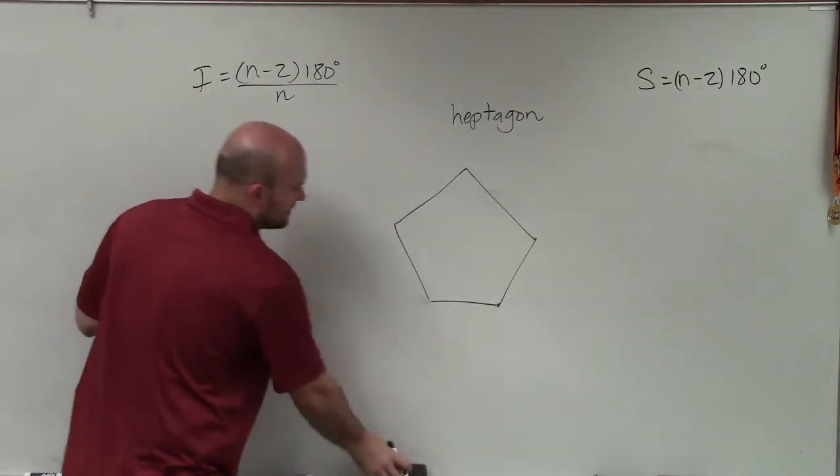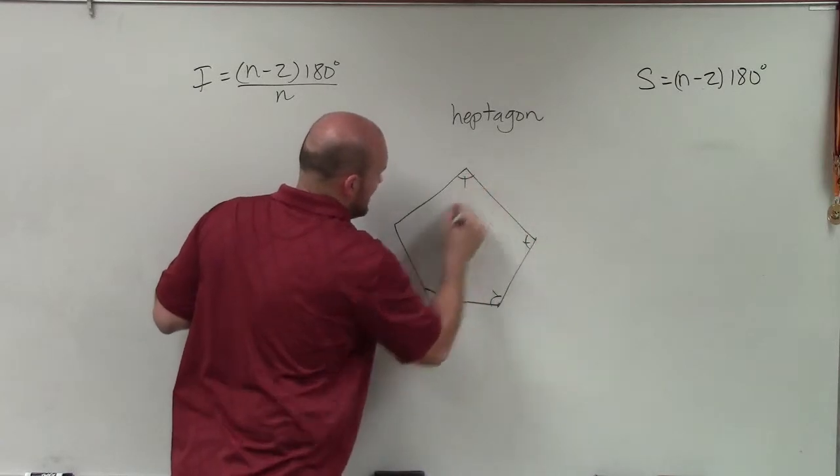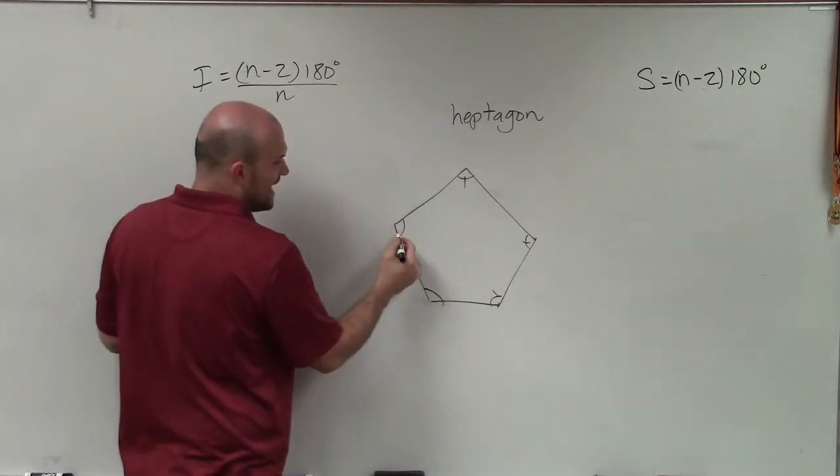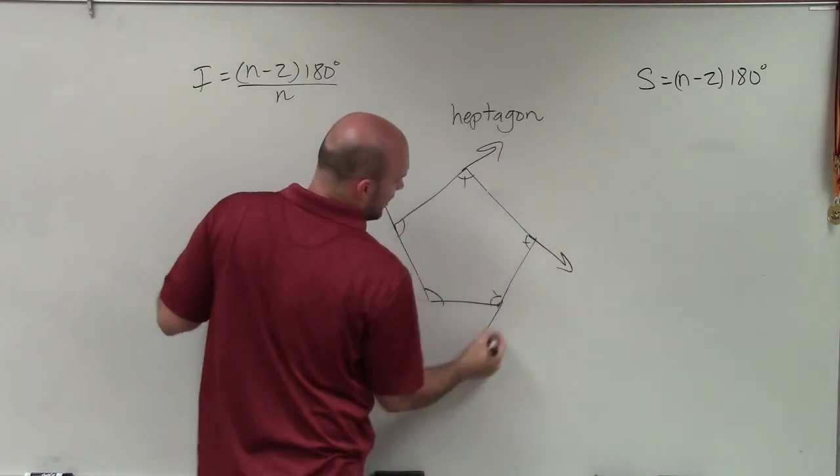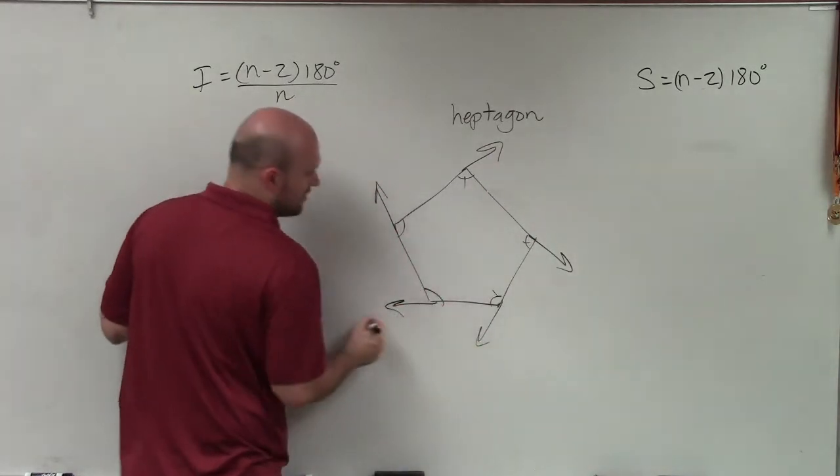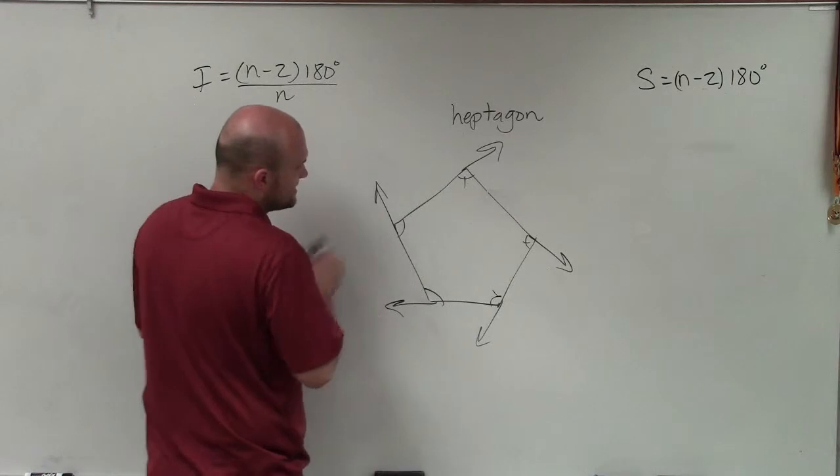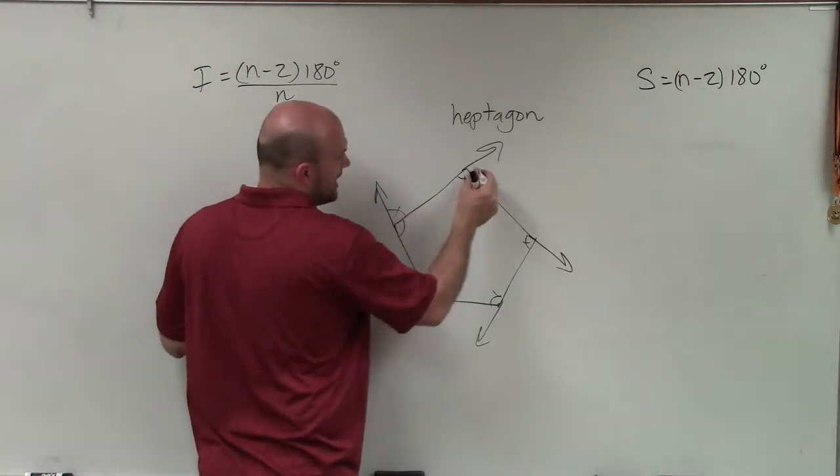Now what's important about this, since all of these angles are exactly the same, remember, finding the exterior angle, all we're going to do is extend sides of our figure, of our polygon. And when we extend sides, we now create our exterior angles.